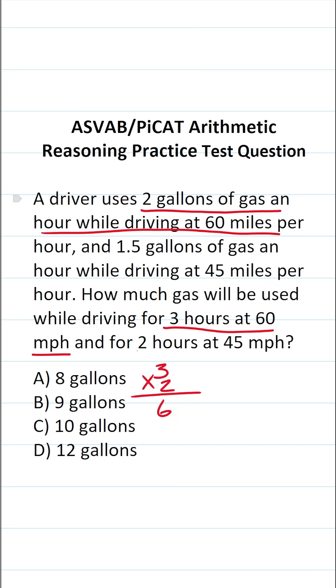Likewise, we know that they drove for two hours at 45 miles per hour and they use 1.5 gallons of gas per hour while driving at 45 miles per hour. So that's going to be 1.5 times two gallons of gas used.